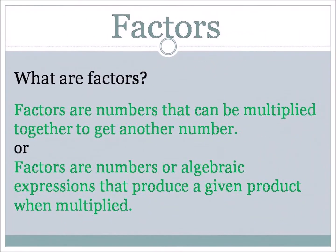We need to know what factors are. Factors are numbers that can be multiplied together to get another number. For example, 2 times 3 is 6, so factors of 6 are 2 and 3. More formally, factors are numbers or algebraic expressions that produce a given product when multiplied.